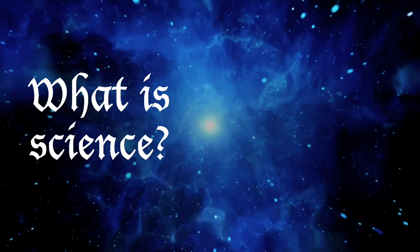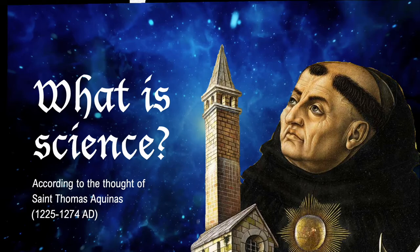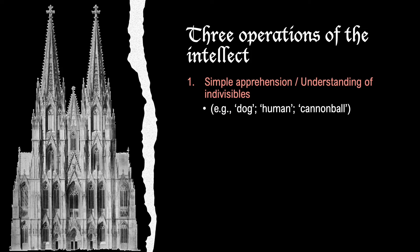What is science according to the thought of Thomas Aquinas? To answer this question, we first need to know the three operations of the intellect according to Thomas Aquinas. The first operation is called simple apprehension, or the understanding of indivisibles. In this operation, we understand simple concepts like dog, human, and cannonball.